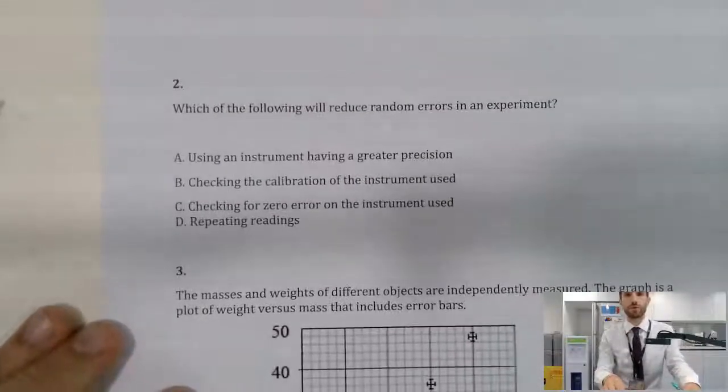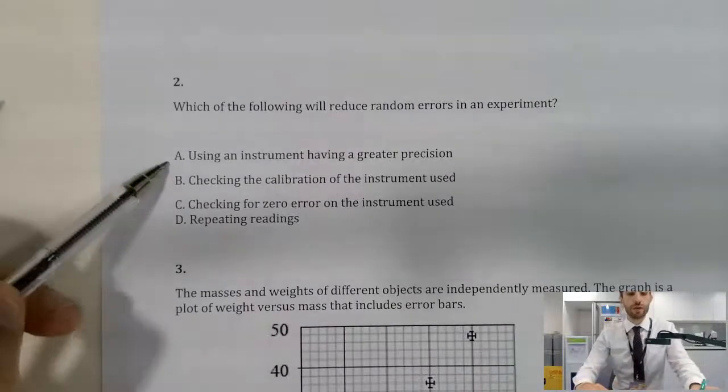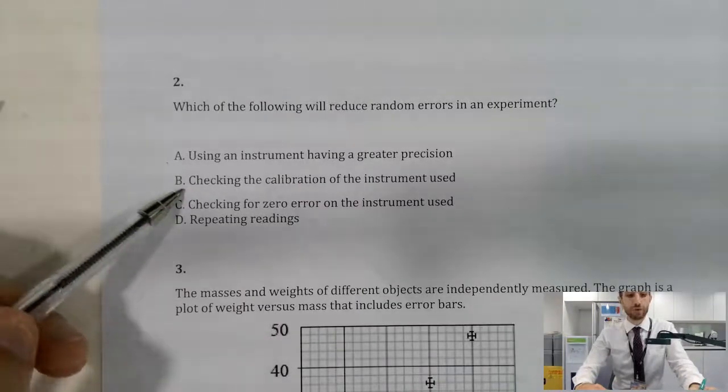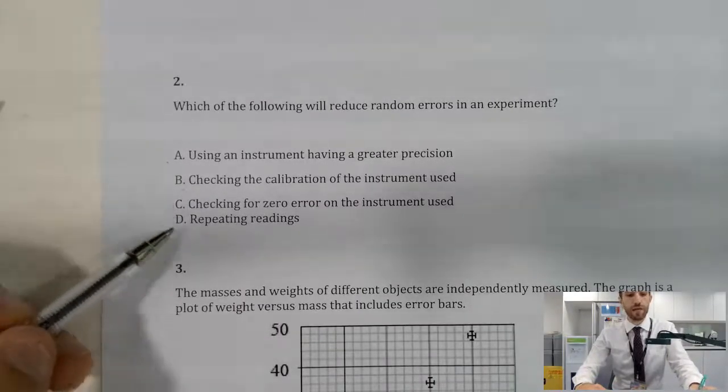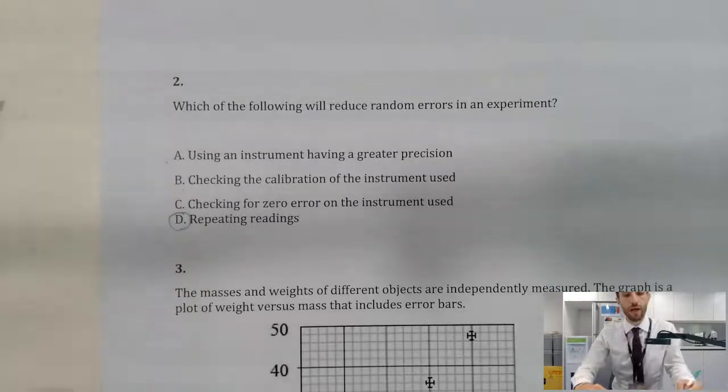Question number two. Which of the following will reduce random errors in an experiment? Using an instrument having greater precision, that's one option, taking the calibration, checking for zero and then repeating readings. The answer here is D. Why?